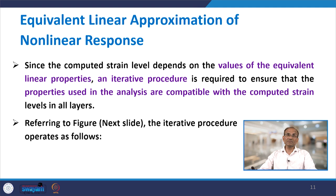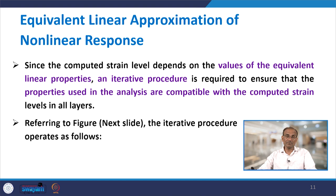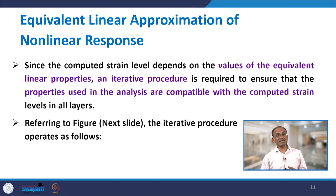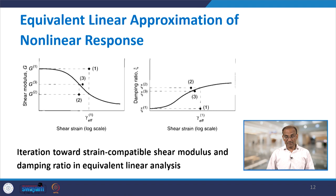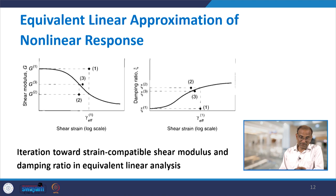Since the computed strain level depends on the values of equivalent linear properties, an iterative process is required to ensure the properties used in the analysis are compatible with the computed strain level in all layers. Initially we assume some property, compute the level of strain coming in each layer, then back-calculate using modulus reduction and damping ratio curves. The properties corresponding to those strain levels will differ from the initial assumption, so we keep doing this iterative process until convergence — meaning the assumed strain and corresponding properties are the same.